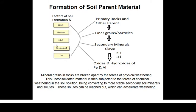Different rocks have different chemicals in their structure. For example, there are rocks rich in iron — when those rocks are decomposed or weathered, we would expect the resulting soils to be rich in iron. Similarly, if the parent material is composed of magnesium or calcium, we would expect soils with more magnesium or calcium, because the composition of the parent materials would affect the kinds of soils produced through weathering.